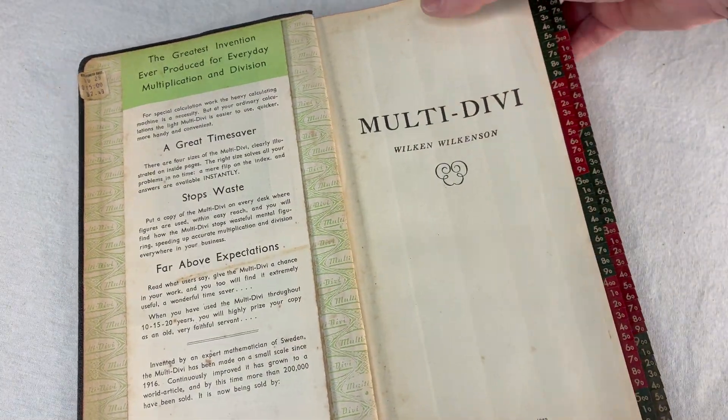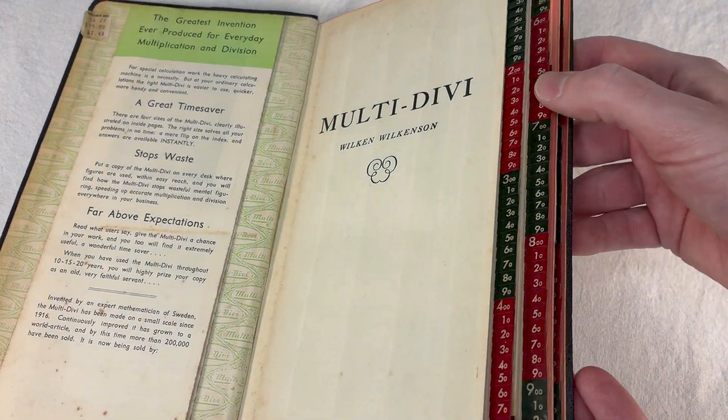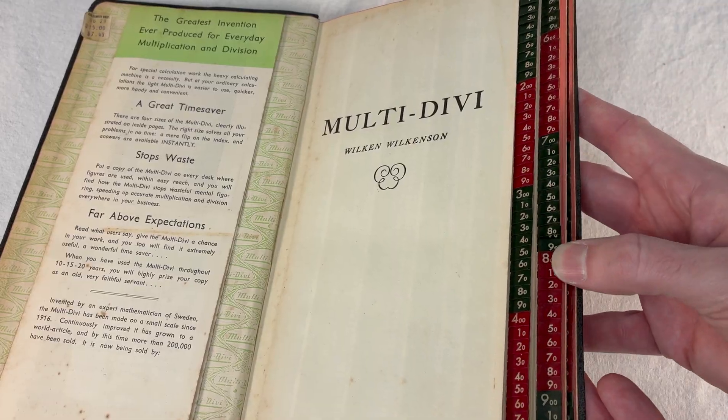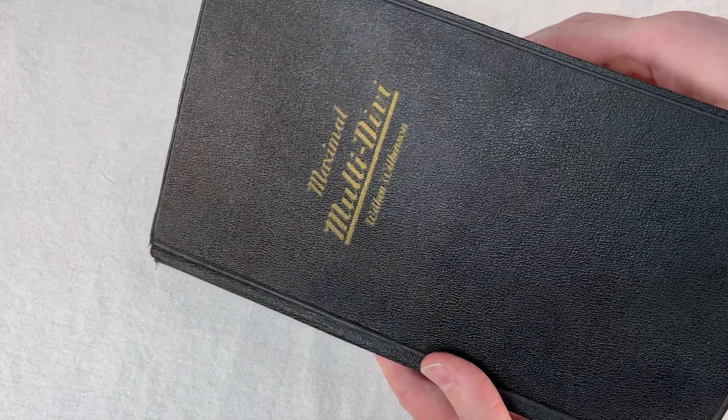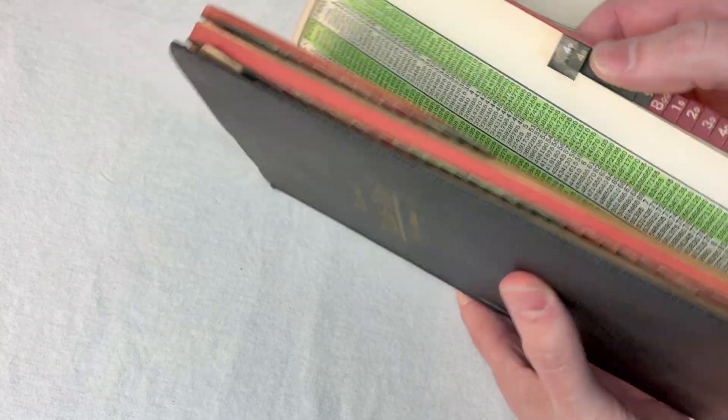I kind of like the multi-divi. I love these tabs on the page ends. It's like my mom's old dictionary. It really does make it more usable. And I like the tall, skinny shape. It just feels good to flip through the pages.